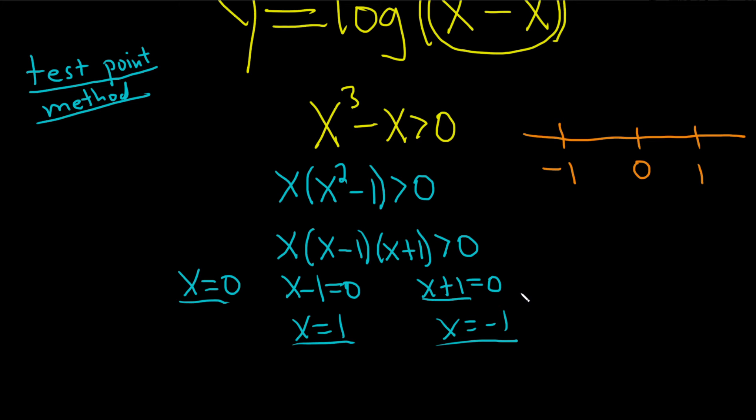And you can pick any number you like besides these. So an easy number that we can use is maybe two. I'm going to use two because it's a nice number. So we're going to check two. And you can plug it in any way you like. You can plug it into this one or you can plug it into this one. I'm going to plug it into this one. So we'll get two cubed minus two. And we want to see if that is actually greater than zero. So two cubed is eight. So we get eight minus two. And again,